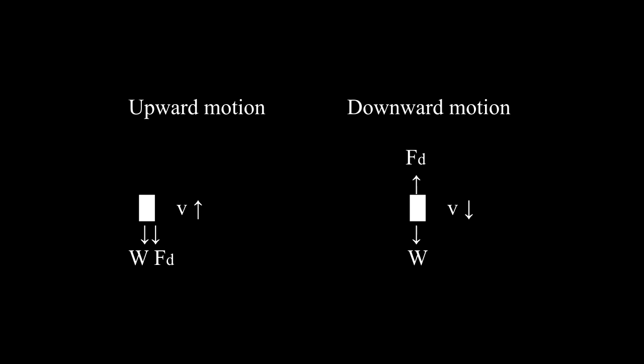Here is the free body diagram for a mass that is tossed vertically into the air. The drag force points in the direction opposite the motion of the object. On the upward portion of the motion, the weight and the drag force both point in the same downward direction. In the downward portion of the motion, the drag force and the weight point in opposite directions.